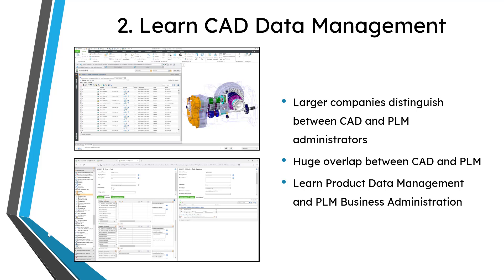You can generally break down PLM administration into two areas: the business side and the system side. The system side is sort of what's under the hood — it involves some coding and a lot of configuration for how the PLM software actually works. But the business administration is what the user sees — things like creating accounts and managing preferences, all that sort of stuff.